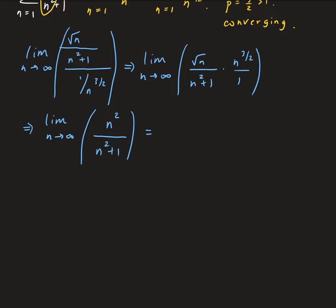So basically we have a degree two on top, degree two on the bottom. And so the limit of this is going to approach one.